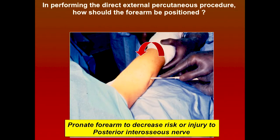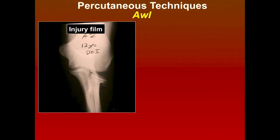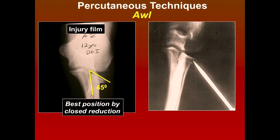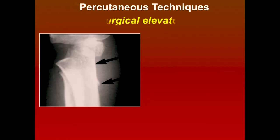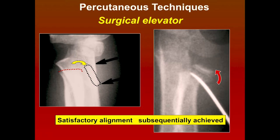There are many devices you can use: a Simon pen, an awl, a surgical elevator. Here's one where this was the best we could do by manipulation, so we put an awl there and pushed on it - you have to do it by the image intensifier. You can see it and push it back for satisfactory alignment. Here's another case where a colleague used a surgical elevator, made a small incision, used a freer elevator, and pushed it up - satisfactory alignment was achieved.